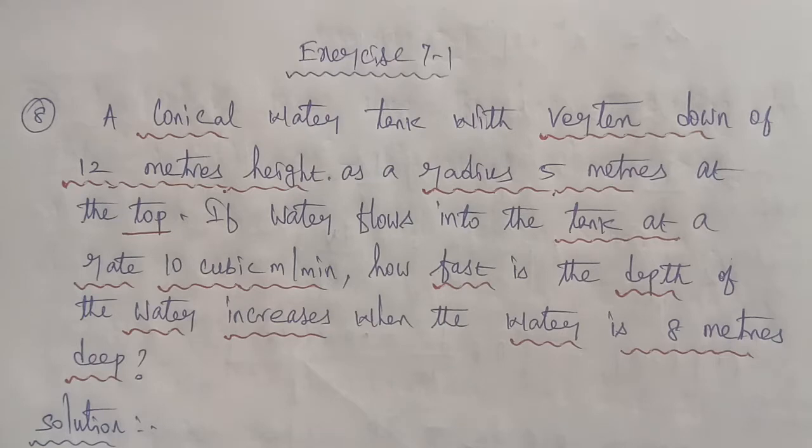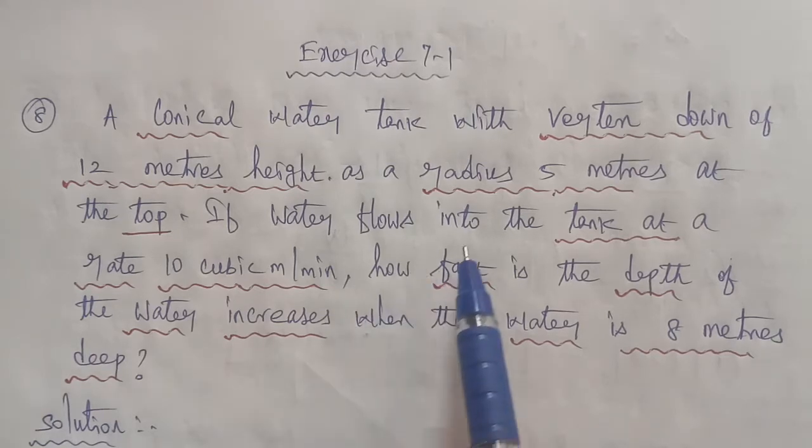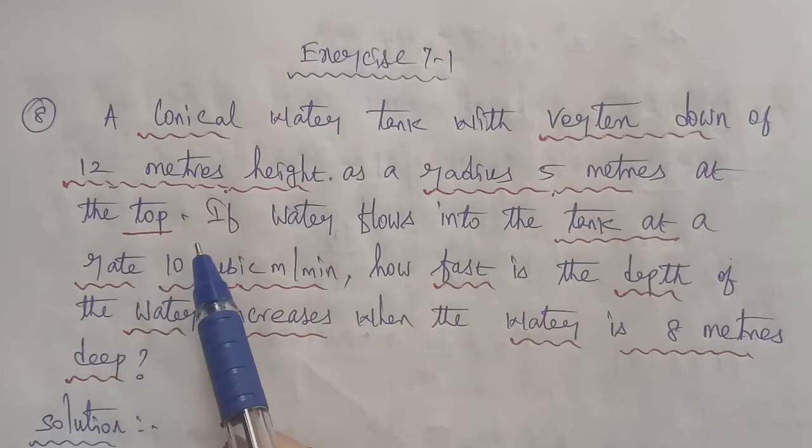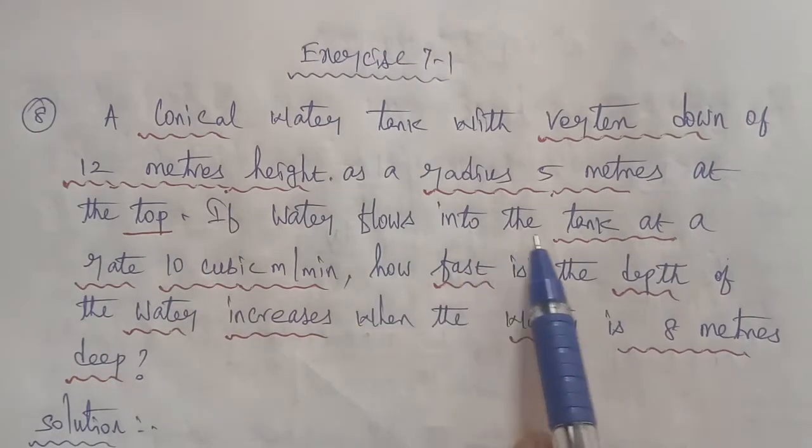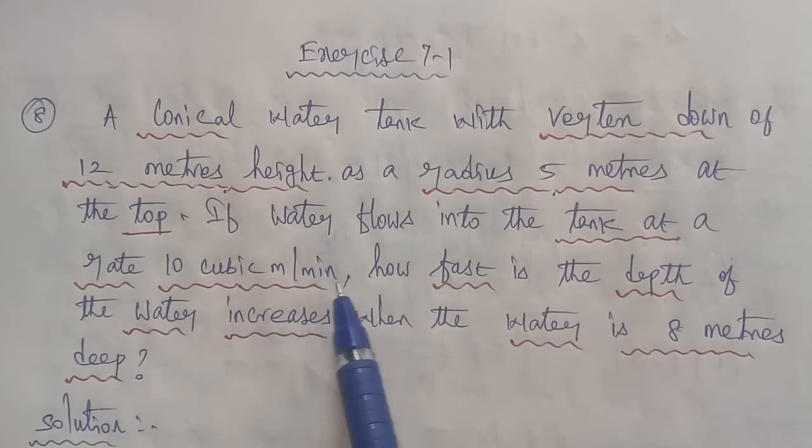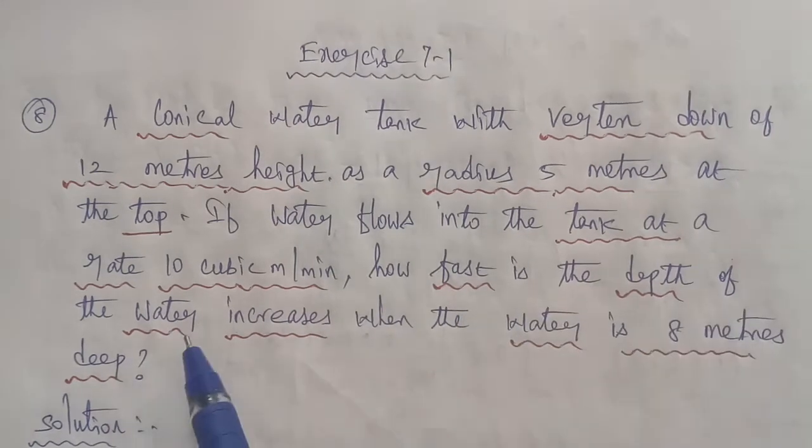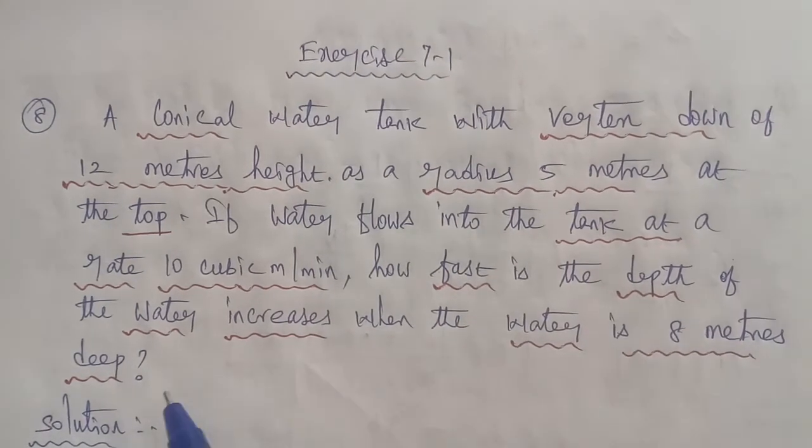A conical water tank with vertex down of 12 meter height has a radius 5 meter at the top. If water flows into the tank at a rate of 10 cubic meter per minute, how fast does the depth of the water increase when the water is 8 meter deep?